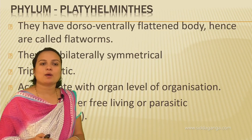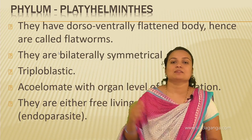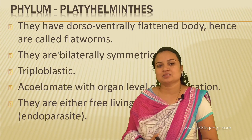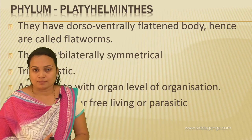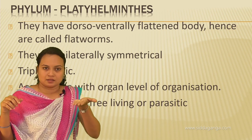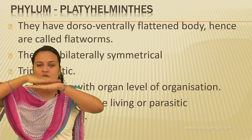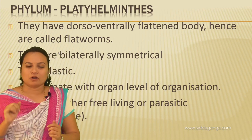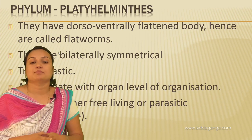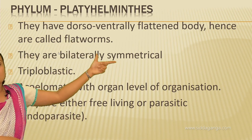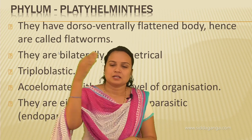Moving on to Phylum Nematoda. The body of nematodes is usually circular — hence they are called roundworms. Platyhelminthes were called flatworms because their body was dorsoventrally flattened, whereas nematodes are called roundworms because the body is circular. These animals may be free living, aquatic, terrestrial, or parasitic in animals and plants.